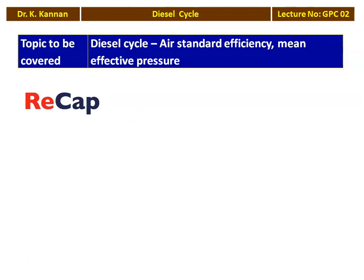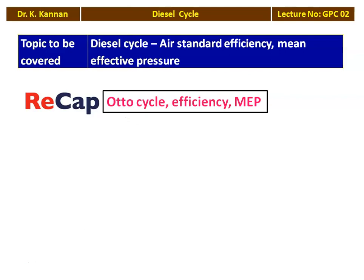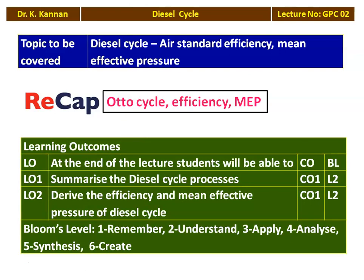We recap from the previous lecture. In the previous lecture, we discussed about the Otto Cycle — we derived the efficiency of the Otto Cycle and Mean Effective Pressure of the Otto Cycle. In a similar fashion, we work for the Diesel Cycle. The learning outcome for this lecture: the student will be able to summarize the Diesel Cycle processes (Bloom's Level 2) and derive the efficiency and Mean Effective Pressure of the Diesel Cycle (also Bloom's Level 2 — understanding).